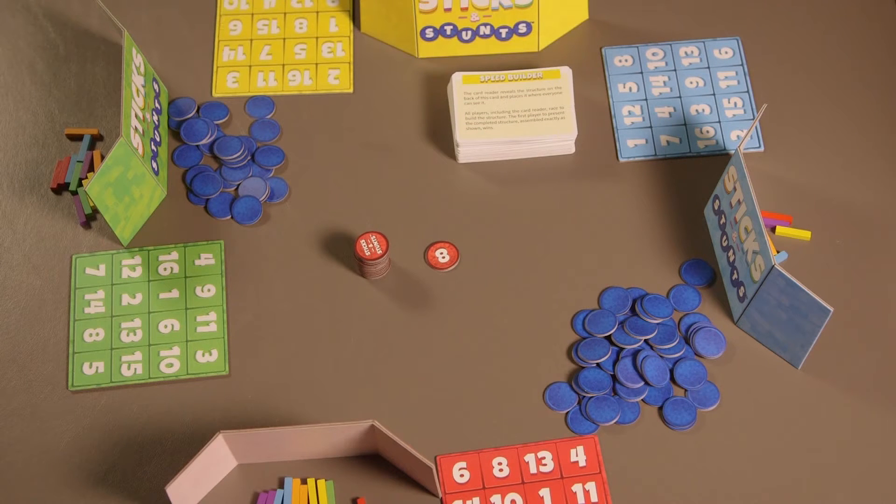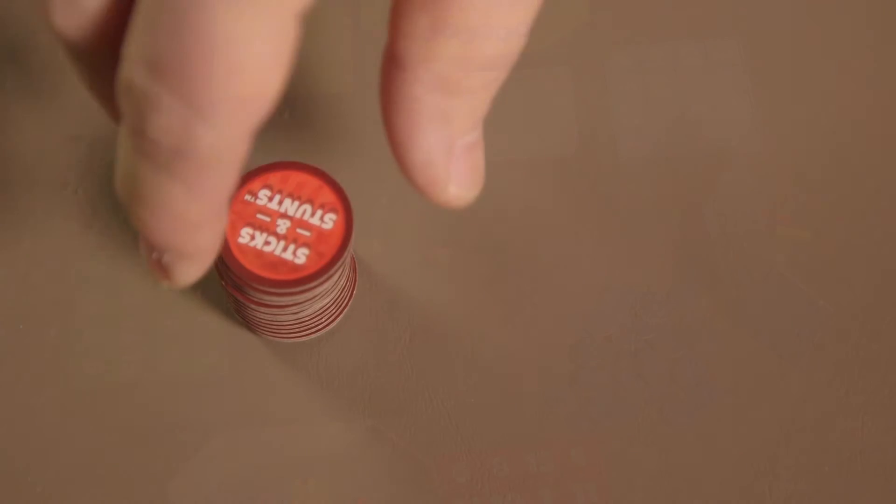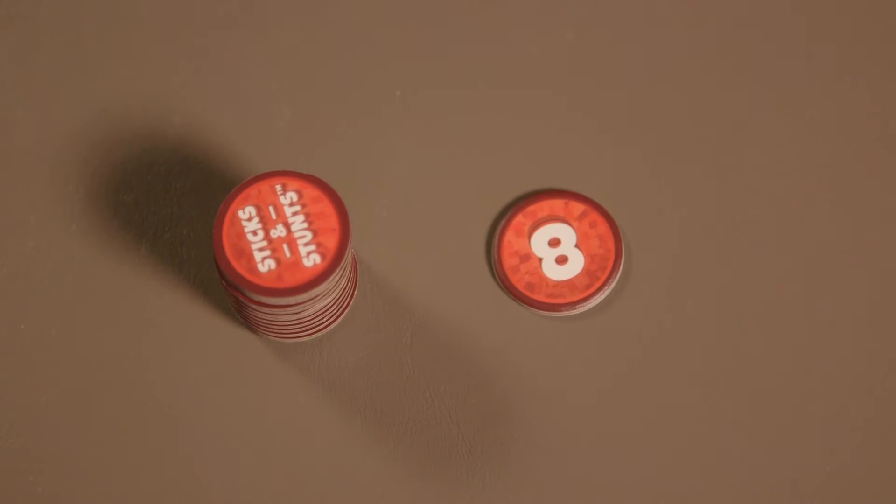The card reader completes the following actions in each round. Flip over the top number token to reveal the number. If a player or players win the activity, this is the number they will cover on their bingo boards with a marker during that round.